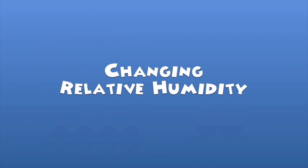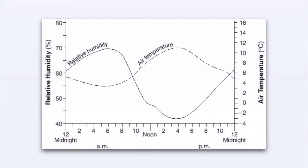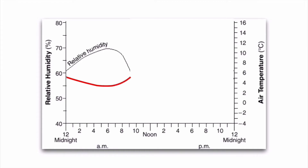If we look at relative humidity and air temperature for a typical day, they are opposite of one another. In the morning, relative humidity is relatively high because air temperature is low. Lower air temperature means the air is more condensed and holds less water vapor — it's closer to its capacity — and therefore has a higher relative humidity.